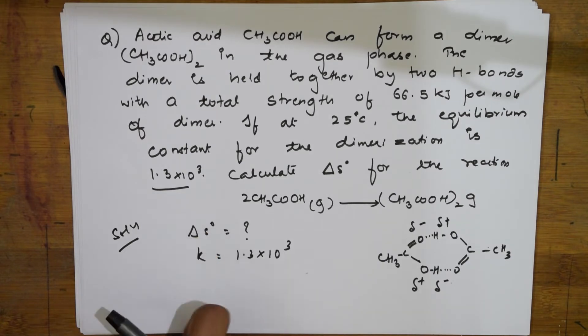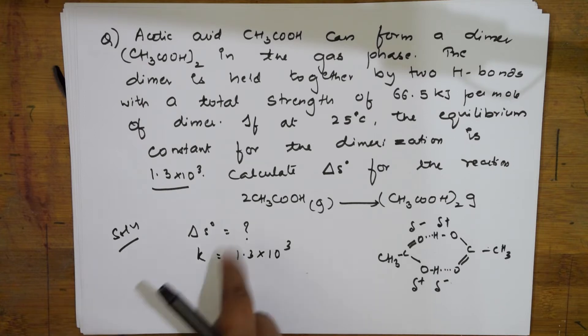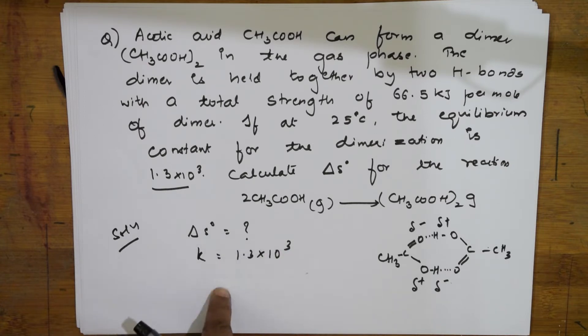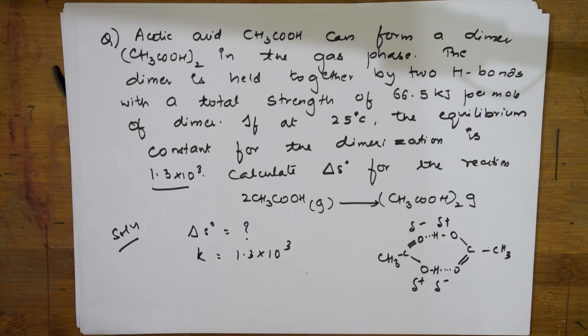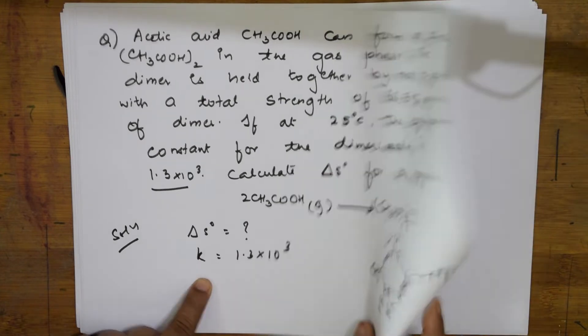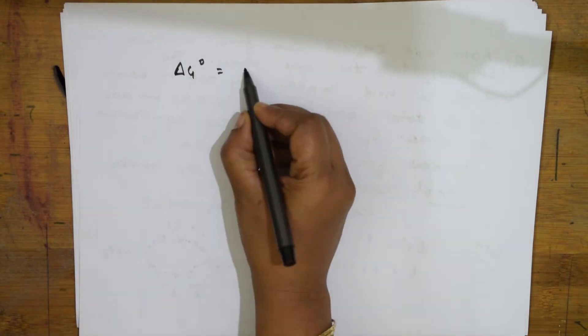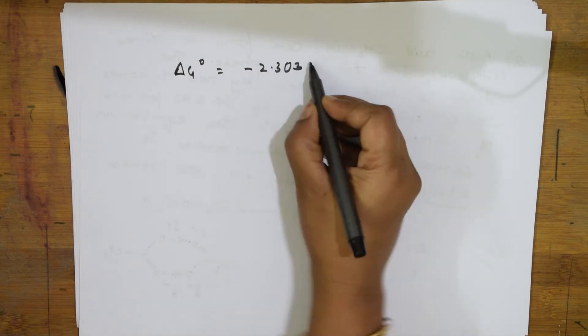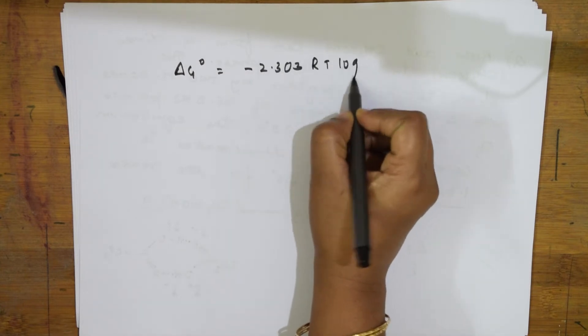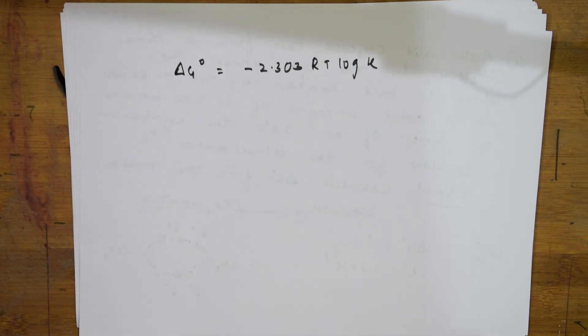Entropy cannot be calculated directly, so first I should find out the free energy change using the equilibrium constant. Because they have given me the K value, I will find the free energy using that formula and then go and calculate the entropy term. The formula relating them is: ΔG° = −2.303 RT log K. Whenever there is an equilibrium state, you use this formula with log K.